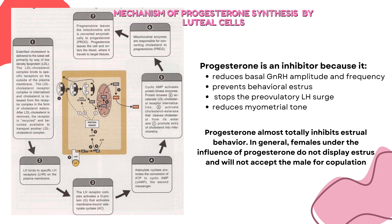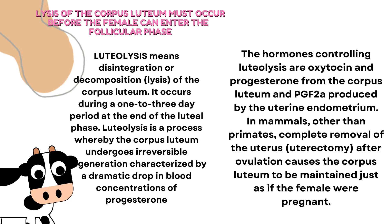Progesterone is an inhibitor because it reduces basal GnRH amplitude and frequency, prevents behavioral estrus, stops the preovulatory LH surge, and reduces myometrial tone. In general, females under the influence of progesterone do not display estrus and will not accept the male for copulation. Luteolysis means disintegration or decomposition of the corpus luteum. It occurs during a 1-3 day period at the end of the luteal phase.